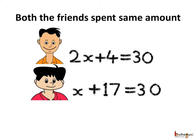Both of you spent the same amount, which is rupees 30. You spent 2x plus 4 and your friend spent x plus 17. So we can say 2x plus 4 and x plus 17 both have equal value, which is equal to 30.